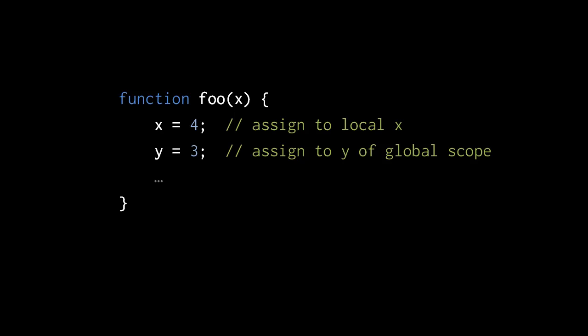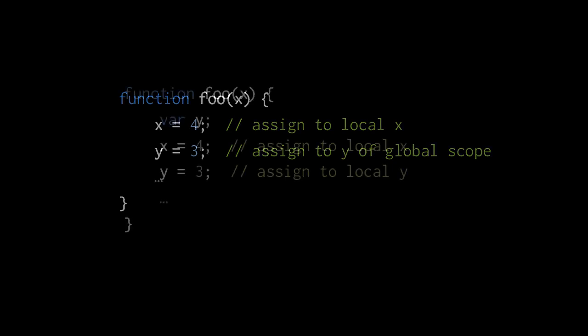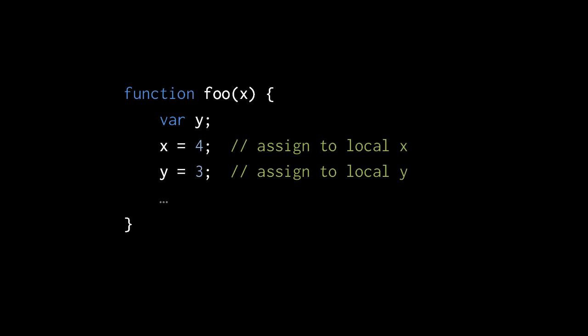Local variables in a Python function get created implicitly by assignments. Recall how things work in JavaScript: in this JavaScript function, x is a local variable because the function foo has a parameter named x, but the variable y is not local because foo has no parameter named y. To make it a local variable we have to explicitly declare it with a var statement.